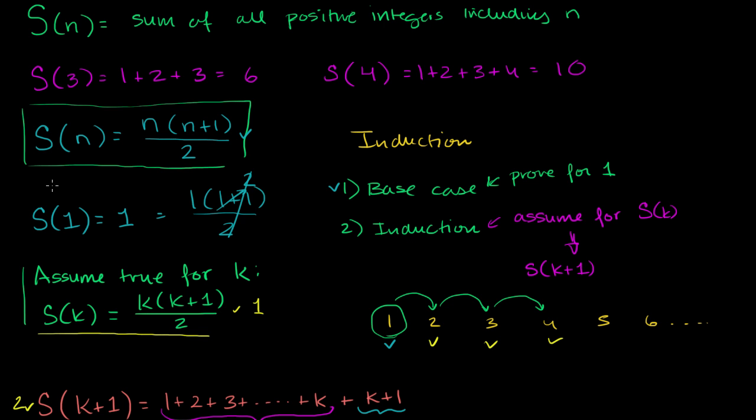In the last video, we proved that the sum of all of the positive integers up to and including n can be expressed as n times n plus 1 over 2, and we proved that by induction. What I want to do in this video is show you that there's actually a simpler proof for that, but it's not by induction. So it wouldn't be included in that video, but I'll show you that it exists so you know that induction isn't the only way to prove it.